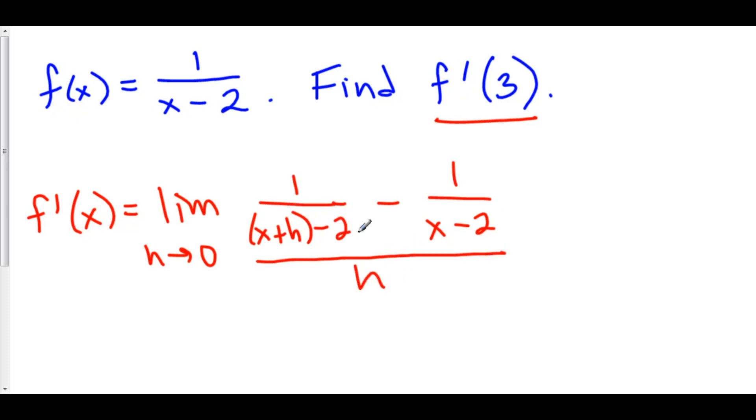This is pretty nasty. And whenever you have some rational function like this, it is going to be rather nasty. And the trick here is to get a common denominator on top. So I'm going to multiply this fraction by x plus h minus 2 over x plus h minus 2.